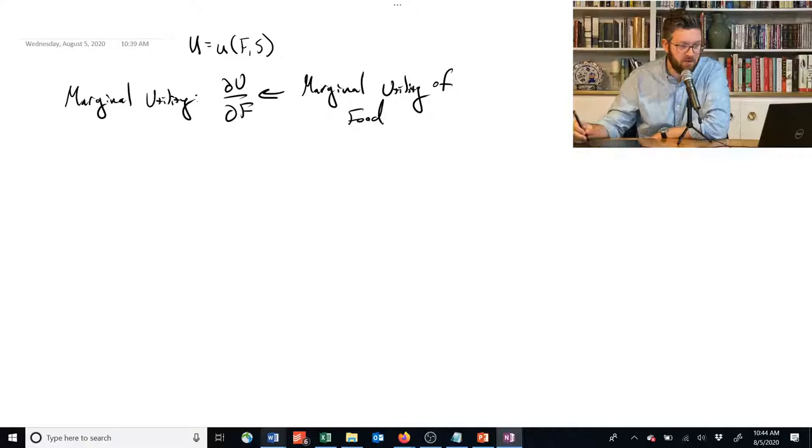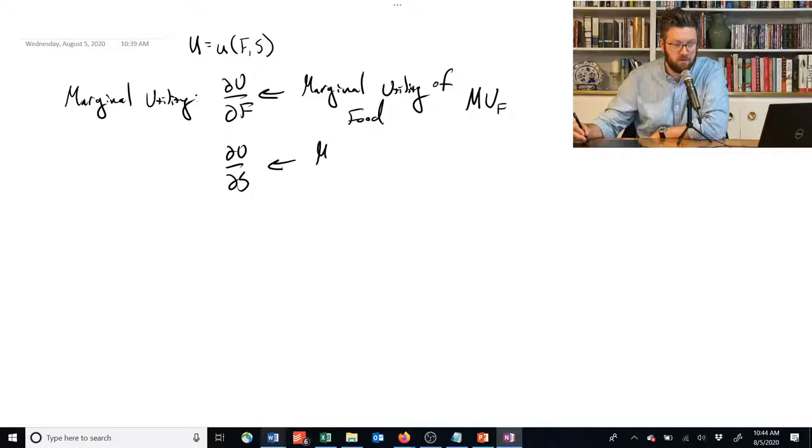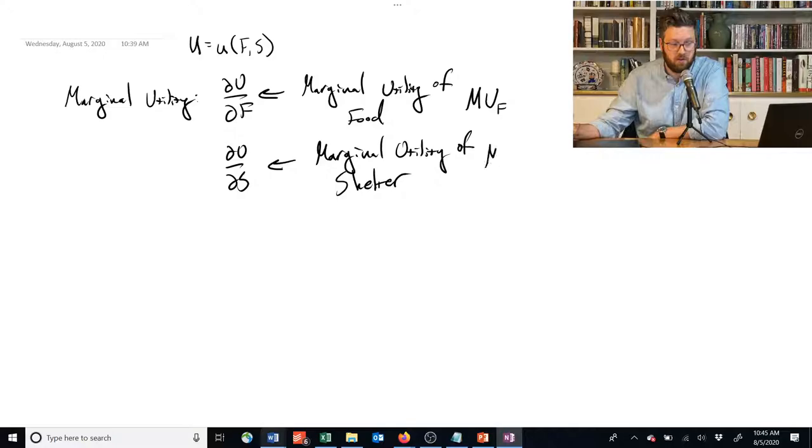This can also be denoted capital MU with a little subscript for f for food or whatever other input is here. You could also have the marginal utility of shelter, and it's just the partial derivative of that utility function with respect to s for shelter, and you can denote that MU with a little s.